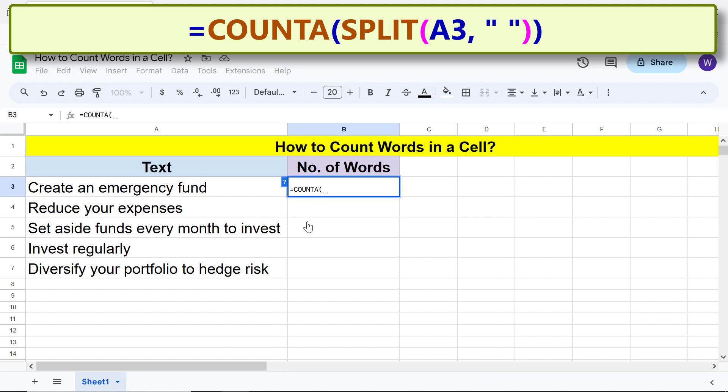For text, click this cell and type comma. For delimiter, insert a space between two double quotes. Type two closing parenthesis, one each for SPLIT and COUNTA.